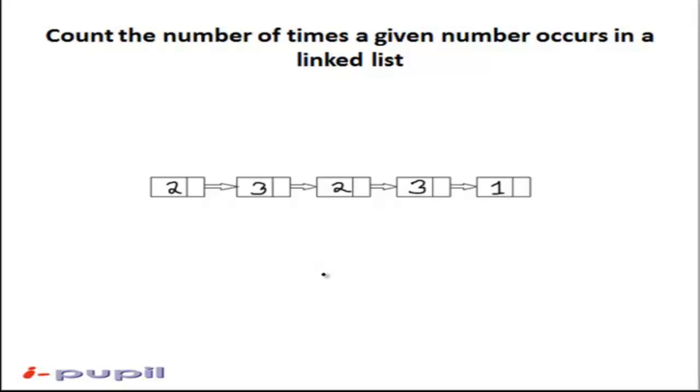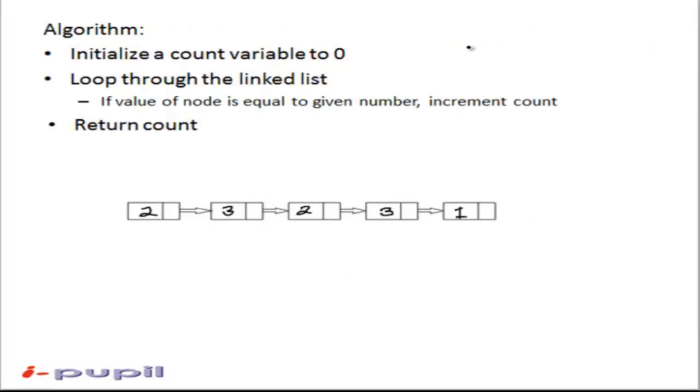And we are supposed to find the number of times the number 3 occurs in the linked list. So how to solve it? Easy, first initialize the count variable to 0. So let us take a variable count equal to 0.